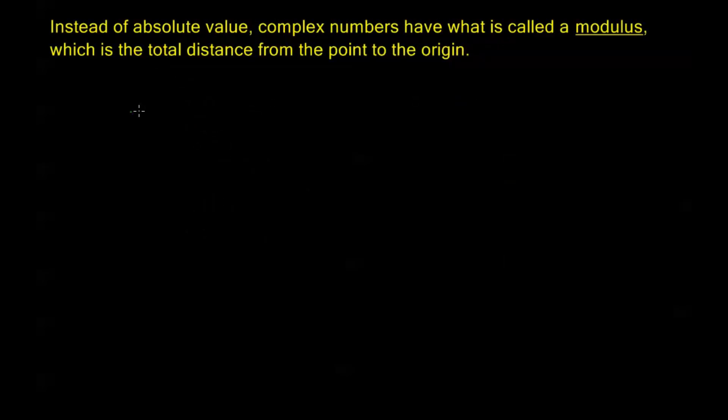Now complex numbers don't have an absolute value, and because of that, they don't actually have an order either. Instead, complex numbers have what is called a modulus, and a modulus is the total distance from the complex number as a point to the origin.